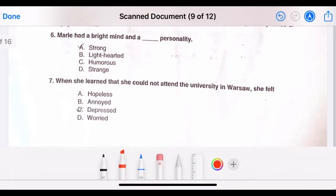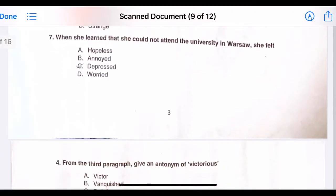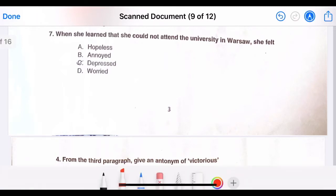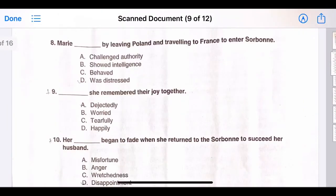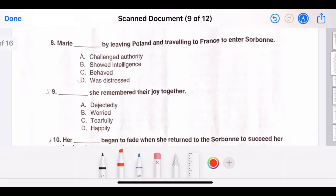Number six, Mary had a bright mind and blank personality. The correct answer is option B, lighthearted personality. Seven, when she learned that she could not attend the university in Warsaw, she felt option B, annoyed. Eight, Mary dashed by leaving Poland and traveling to France to enter Sorbonne. Number A, challenged authority.